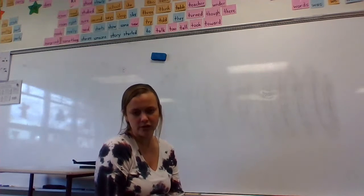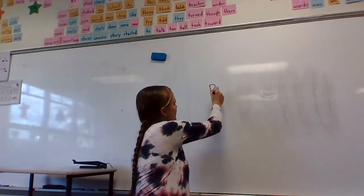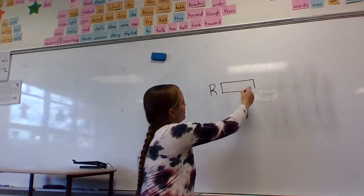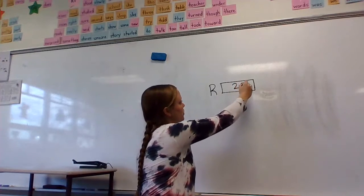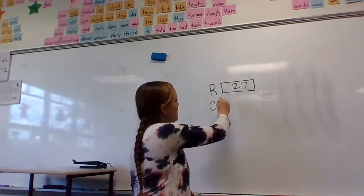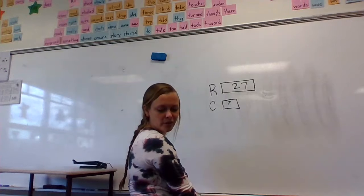So the first thing I want you guys to do is let's do a tape diagram please. So we got to put R for Rita and Rita has how many pennies total? The problem told you 27. Let's put a C for Carlos please. Now we're trying to figure out how many pennies does Carlos have? We don't know so I'm going to put a box with a question mark.